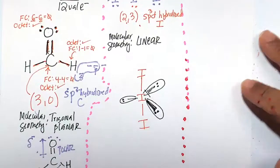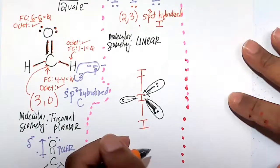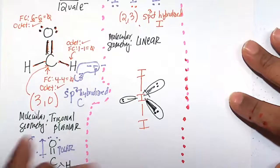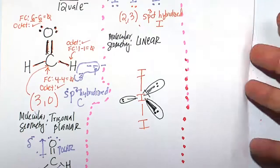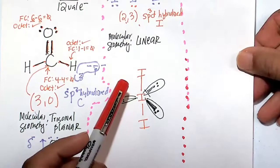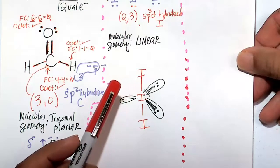So here's the structure of I3 minus. So let's do, before we draw the three-dimensional structure of the molecule, let's do a little bit of our formal charge and octet rule calculation.